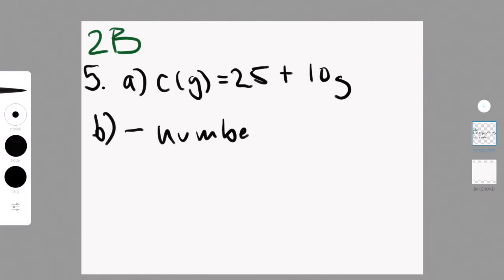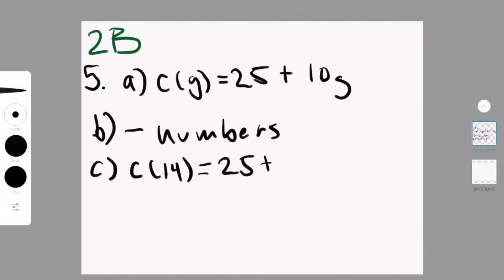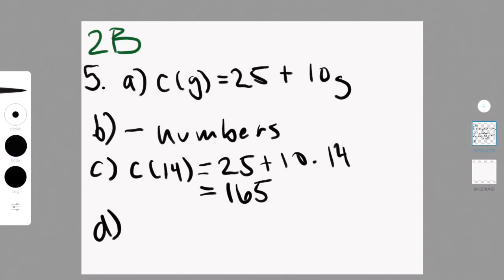For part B, what values of G do not make sense in this context? Negative numbers, because nobody is going to have negative gigabytes — that's not how phones work. For part C, they ask you to state the notation and calculate the roaming cost for a trip where 14 gigabytes of data were used. I plugged 14 into the formula and found that Y equals 165 pounds — so that's the amount it would cost.